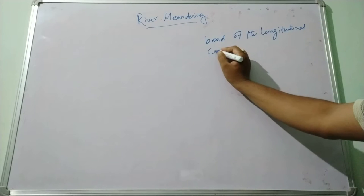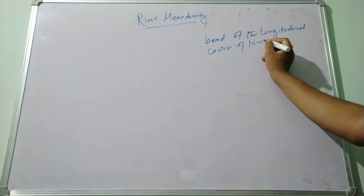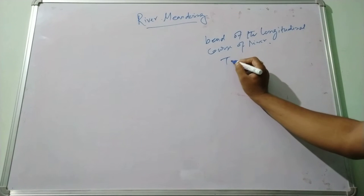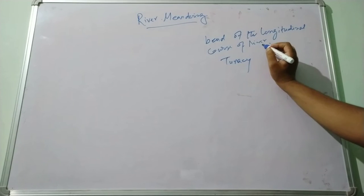The longitudinal course of the river. The word meandering has derived from Turkey, of the small winding river.